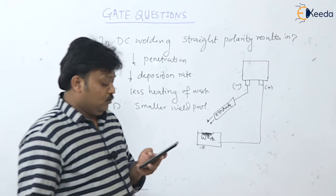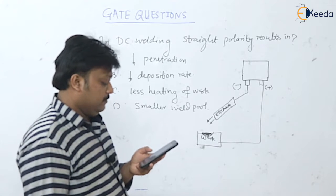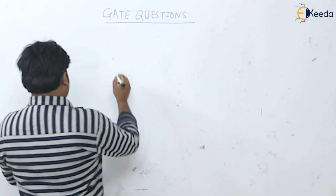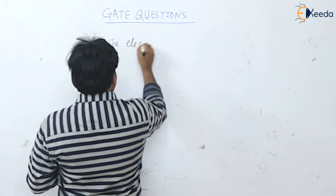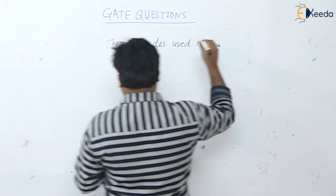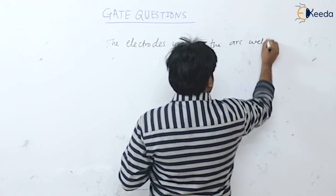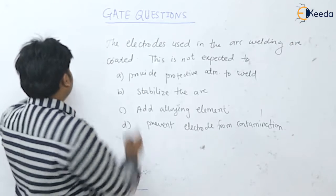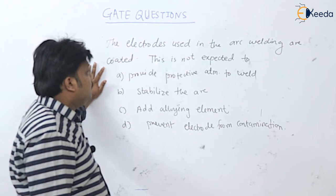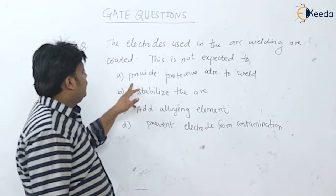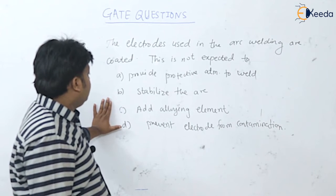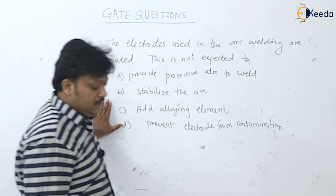Next question: the electrodes used in arc welding are coated — this is not expected to — options are: provide protective atmosphere to the weld, stabilize the arc, add alloying elements, and prevent the electrode from contamination.